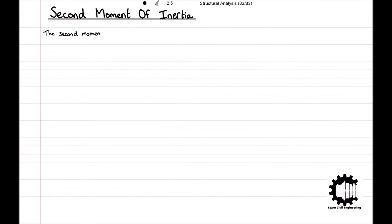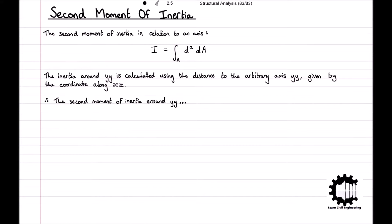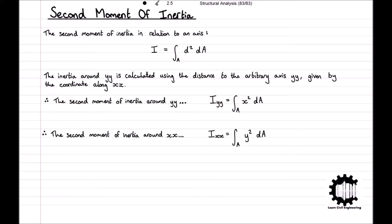Analytically, the second moment of inertia in relation to an axis is given by I equals the integral of d squared with respect to the area, where d is the distance of each point to the axis. The inertia around yy is calculated using the distance to the arbitrary axis yy, given by the coordinate along xx. Therefore, more specifically, the second moment of inertia around yy is given by Iyy equals the integral of x squared with respect to the area, and the second moment of inertia around xx is given by Ixx equals the integral of y squared with respect to the area.